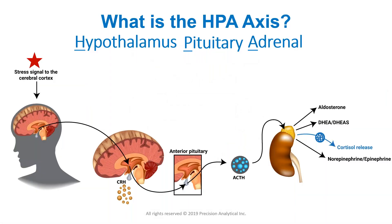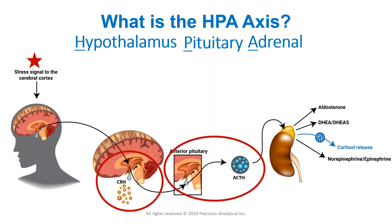So what is the HPA axis? It's the hypothalamic-pituitary-adrenal axis. When any kind of stress signal comes to the brain — whether endogenous or exogenous, physical, mental, emotional, or chemical — the hypothalamus releases CRH, which goes to the pituitary and releases ACTH. That moves downstream and tells the adrenal glands to release aldosterone, androgens, norepinephrine, epinephrine, catecholamines, and of course cortisol, which is the big one we'll talk about today.